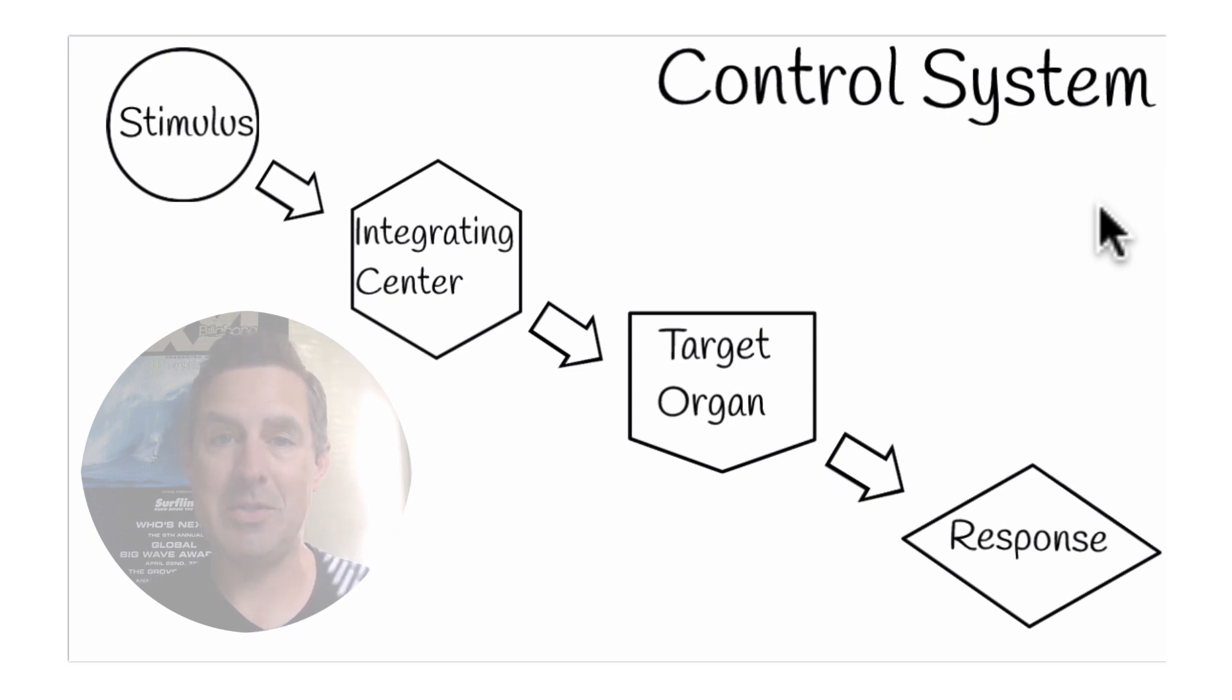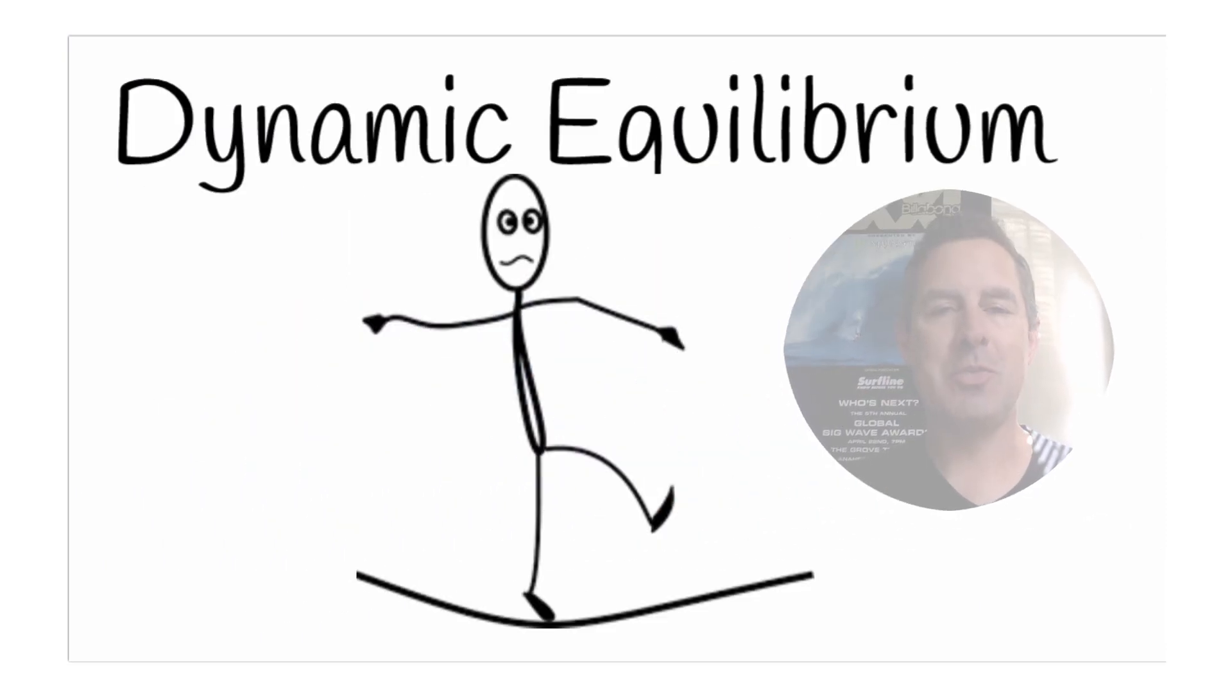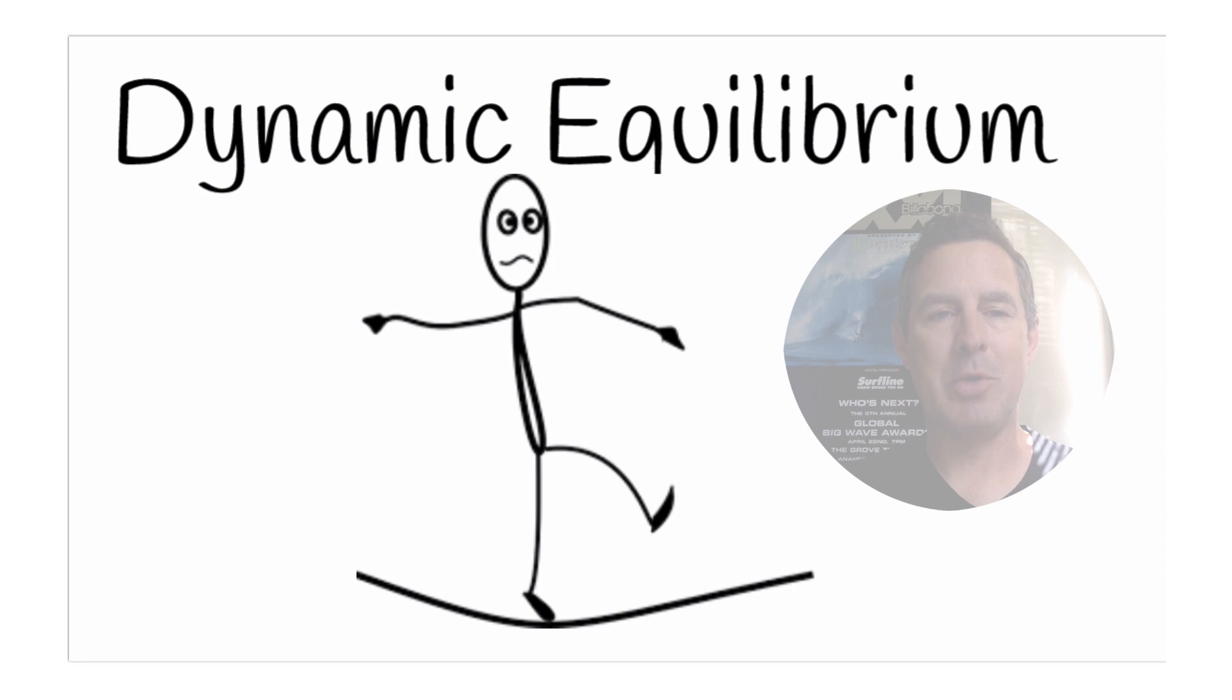Negative feedback does. And one thing I want to point out: negative feedback is not bad, even though the word negative is in there. We only refer to it as negative because the response is going in the opposite direction of the original stimulus. Homeostasis, once again, is a dynamic equilibrium that maintains specific variables within a narrow range.